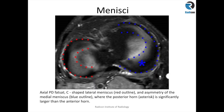The meniscus — the medial meniscus is a crescent shape with a larger posterior horn as compared to the anterior horn, and the lateral meniscus is a C-shaped structure.